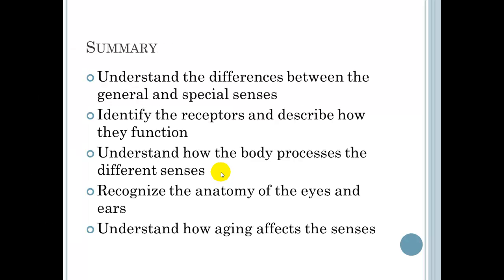This is a summary, so this is going to summarize and end Part 3 of Chapter 9. Understand the differences between the general and special senses. Identify the receptors and describe how they function. Understand how the body processes the different senses. Recognize the anatomy of the eyes and ears. Understand how aging affects the senses.